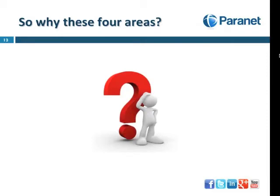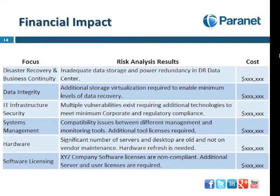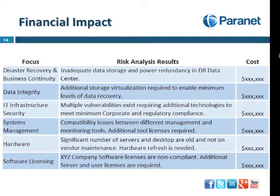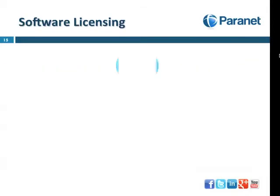Why these four areas? Because they're going to uncover the financial impact of risks or the total cost of ownership issues associated with technology in your organization. This includes examples around disaster recovery, data integrity, hardware issues, and software licensing — all of which have a risk analysis and a cost associated with them.